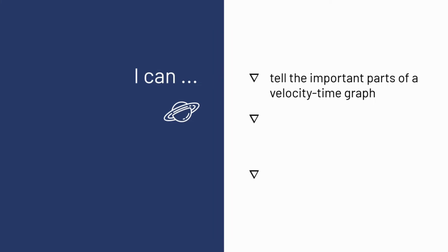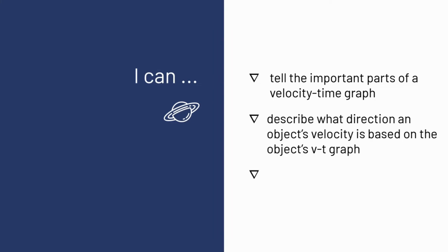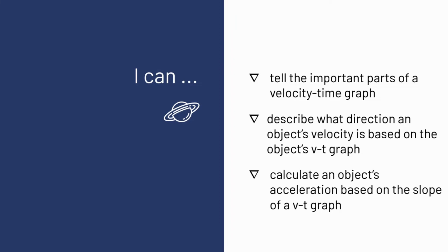The success criteria for this lesson are: I can tell the important parts of a velocity-time graph; I can describe what direction an object's velocity is based on a velocity-time graph; and I can calculate an object's acceleration based on the slope of a velocity-time graph.